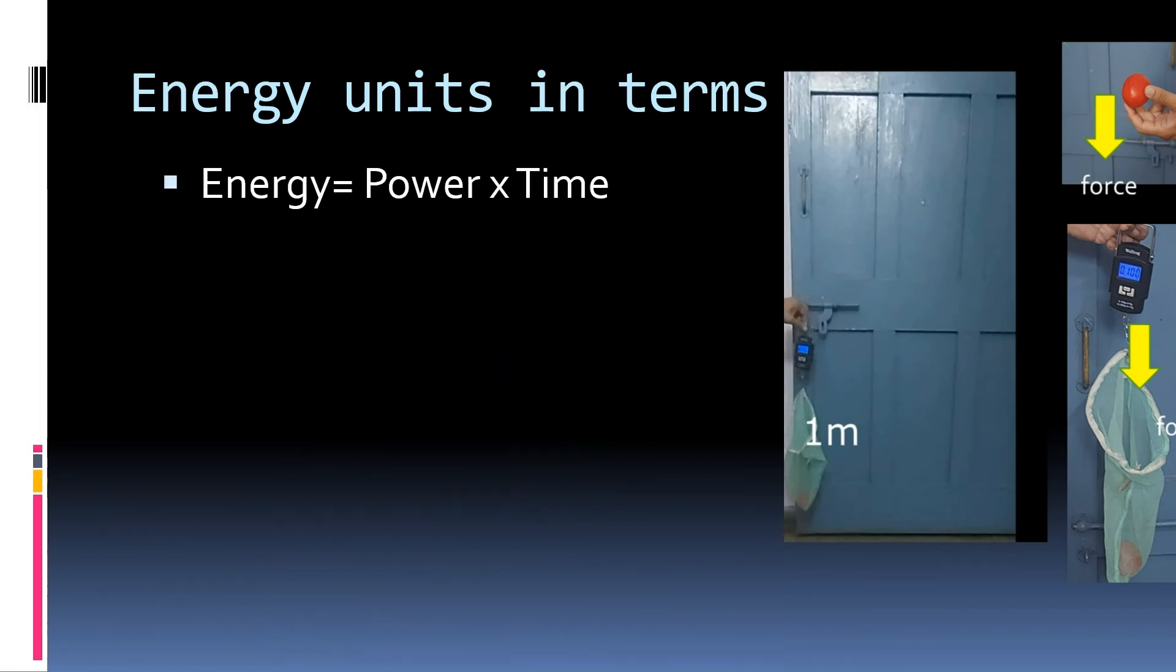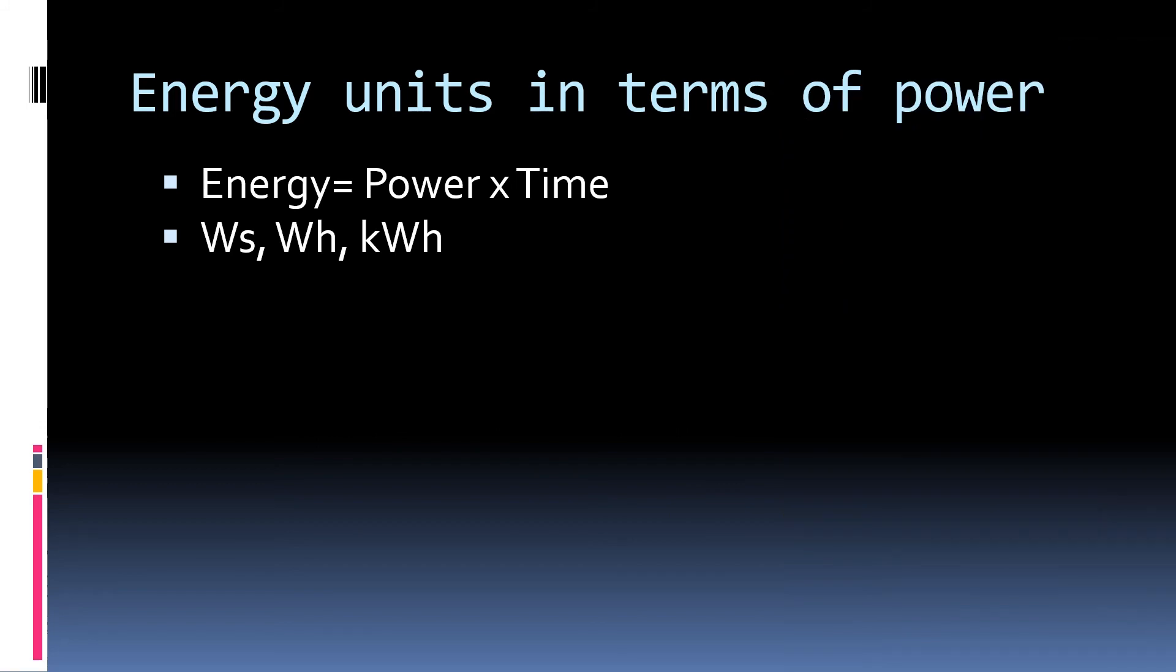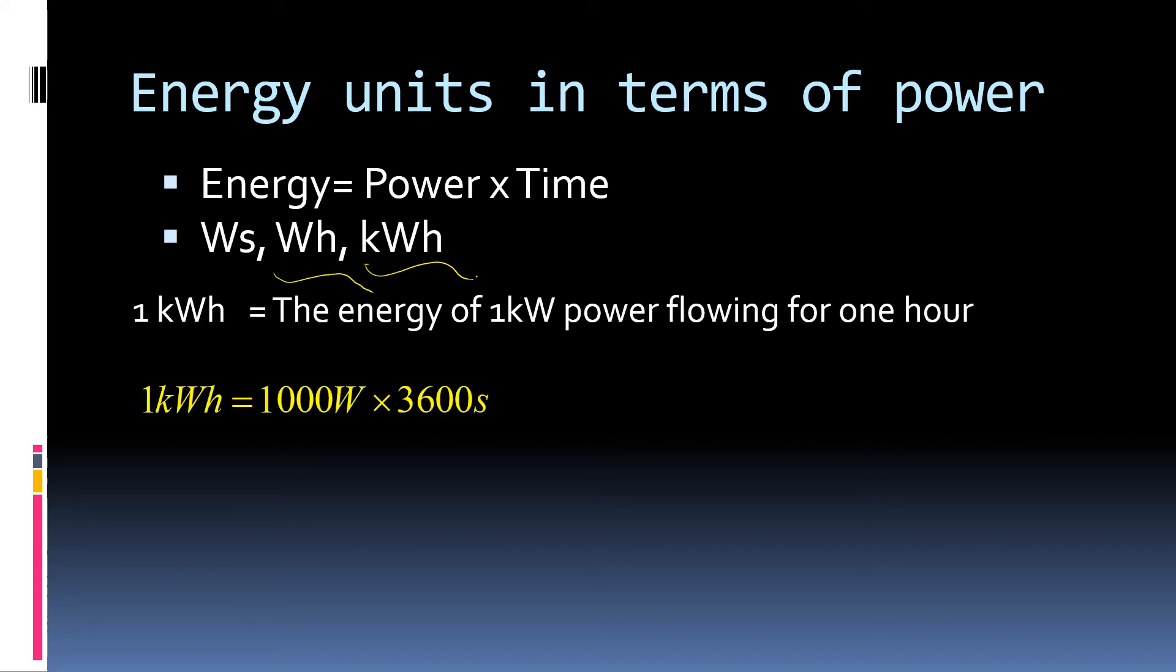If we change time units to hours and write 1000 Watt as 1 Kilowatt, we will get units like Watt hour and Kilowatt hour. 1 Kilowatt hour is energy of 1 Kilowatt power flowing for 1 hour. We can convert 1 Kilowatt hour to Joule also. 1 Kilowatt is 1000 Watt and 1 hour is 3600 seconds. So 1 Kilowatt hour will be equal to 3.6 into 10 raised power 6 Joules or 3.6 Megajoules.